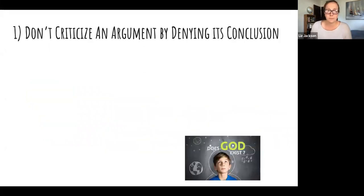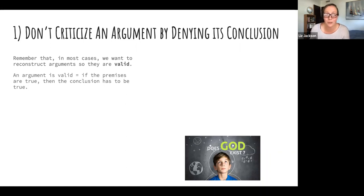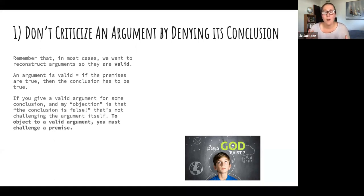Tip number one: don't criticize an argument by simply denying its conclusion. In most cases when reconstructing an argument, we want it to be valid — the premises guarantee the truth of the conclusion. So if you give me a valid argument and my objection is essentially that the conclusion is false, that could be a point worth making, but it is not challenging the argument itself. To challenge a valid argument, you need to challenge one of its premises.